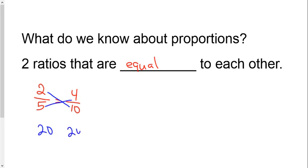And when you get the same product when you cross multiply, that's a proportion.